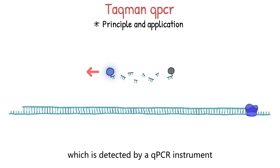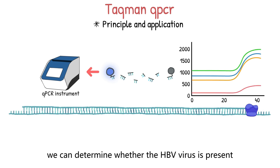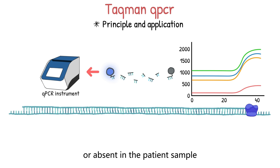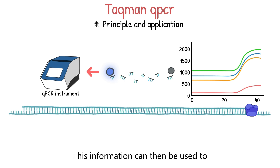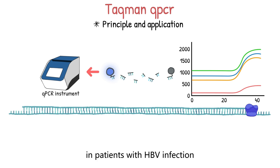The separation of the reporter and quencher dyes generates a fluorescent signal, which is detected by a qPCR instrument. By analyzing the resulting data, we can determine whether the HPV virus is present or absent in the patient sample. This information can then be used to guide treatment decisions and monitor disease progression in patients with HPV infection.